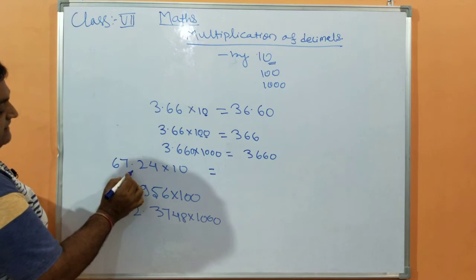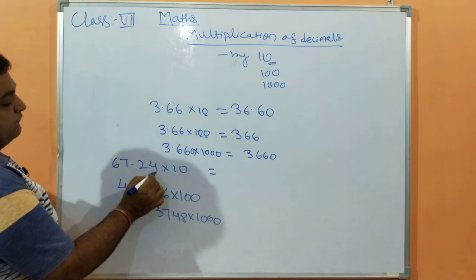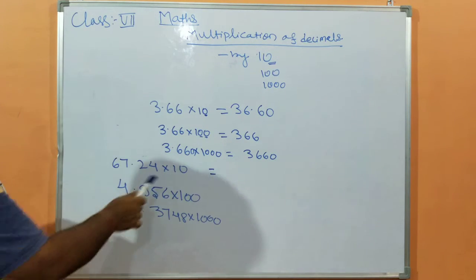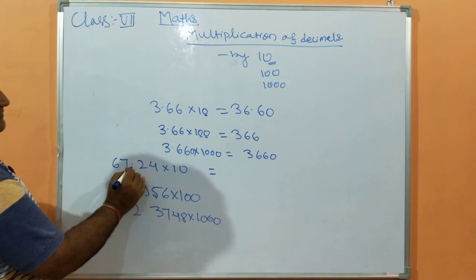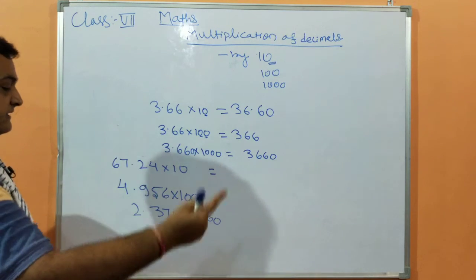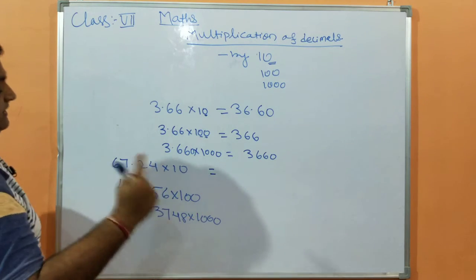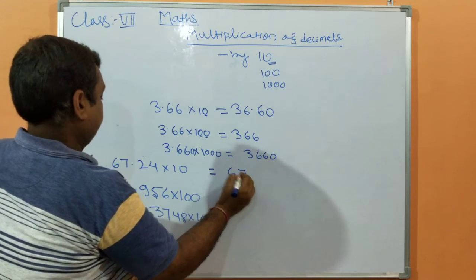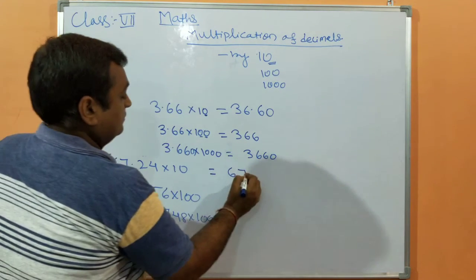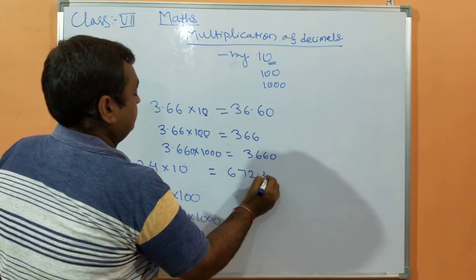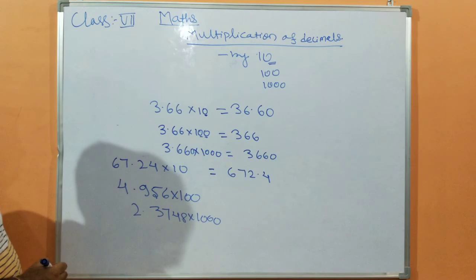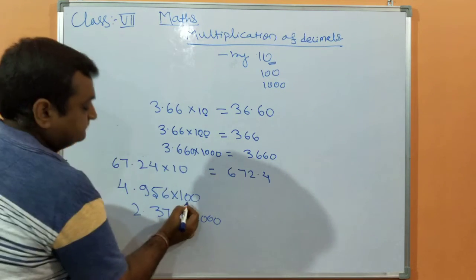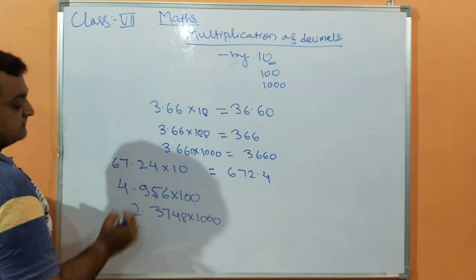67.24 multiplied by 10. When multiplied by 10, where do we shift the decimal position? Right, how many digits? 1 digit. So the answer is 672.4. The number shifts right.